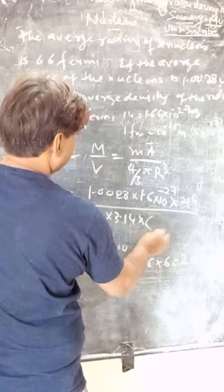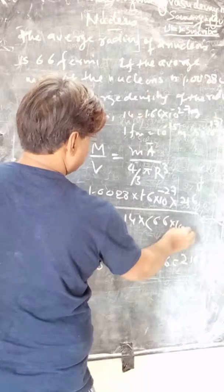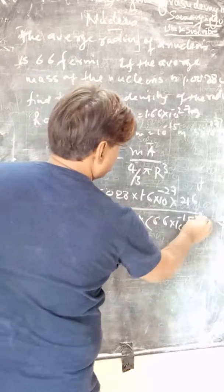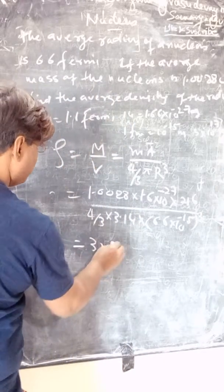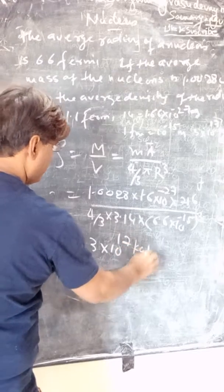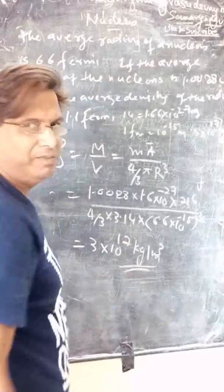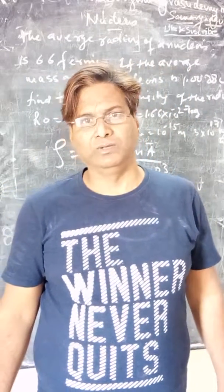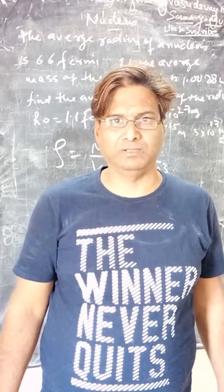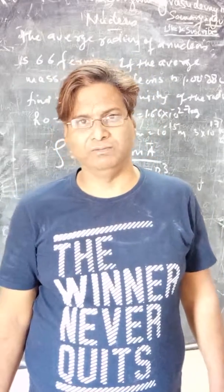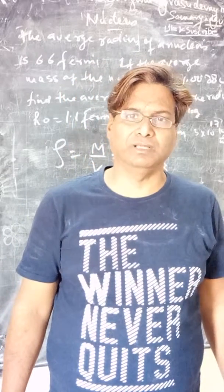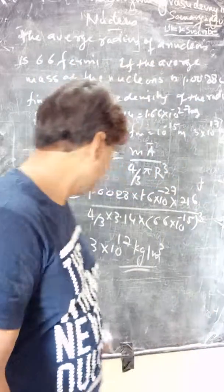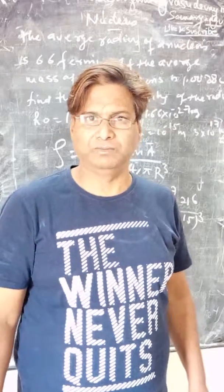With r = 6.6 × 10⁻¹⁵ meter, we compute r³ and solve the expression. The final result is approximately 3 × 10¹⁷ kg/m³. To summarize: we first found r using r = r₀ · A^(1/3) to get A, then applied ρ = mass/volume with all values to get the nuclear density as 3 × 10¹⁷ kg/m³.